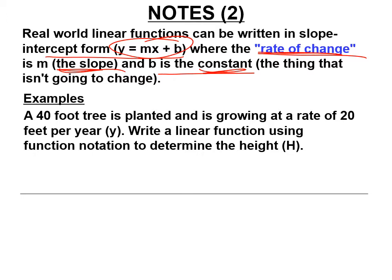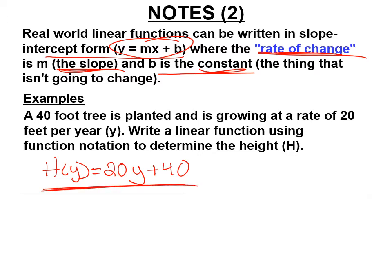A 40-foot tree is planted and growing at a rate of 20 feet per year. Write a linear function using function notation to determine the height. It's going to be height as a function of years — H of y. The rate of 20 feet per year is the slope, and it started at 40 feet. There's no single total — instead, we're going to graph it.